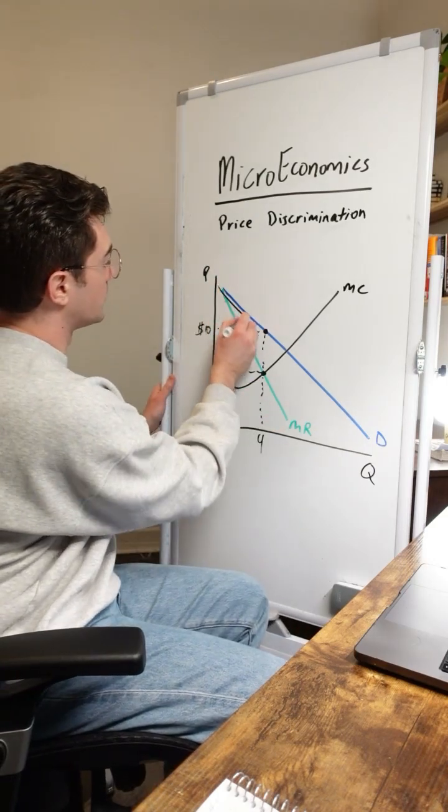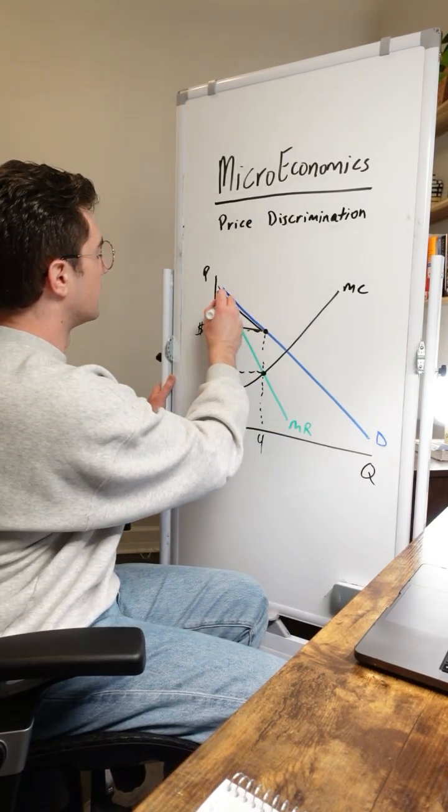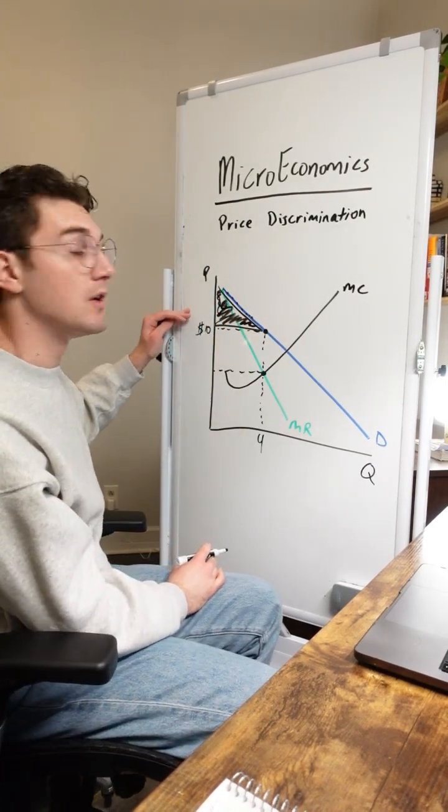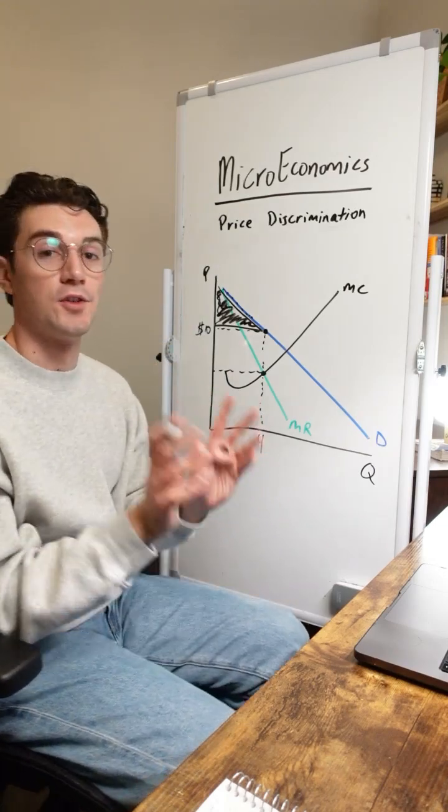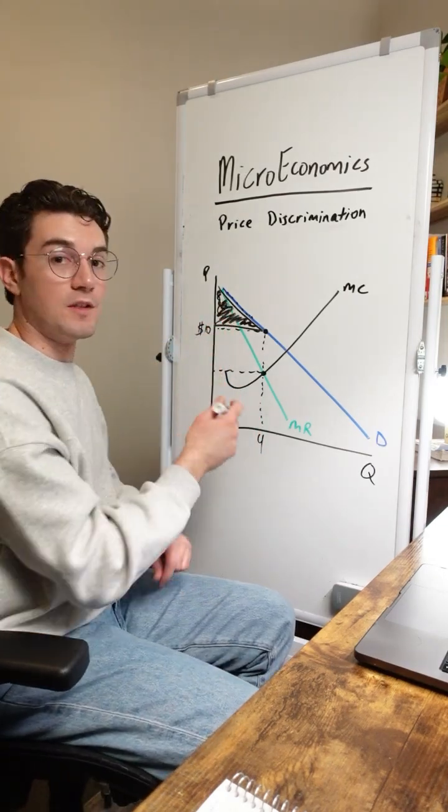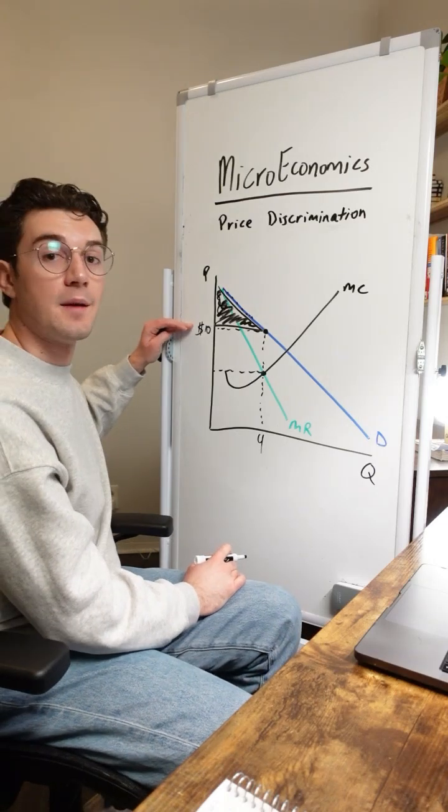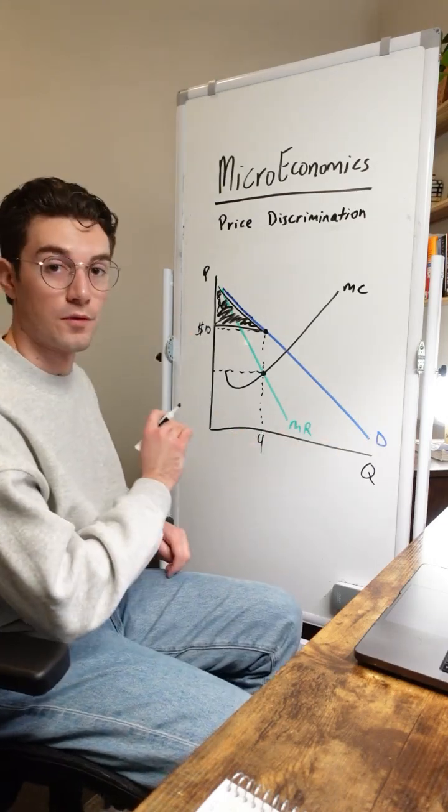In turn, consumers will generate this triangle here of consumer surplus. There's some consumers that lie up here on the demand curve that value the good more than 10 bucks and in turn are getting a deal. So this triangle is essentially the additional benefit that goes to consumers for being able to pay 10 bucks per unit across the board for all units sold.